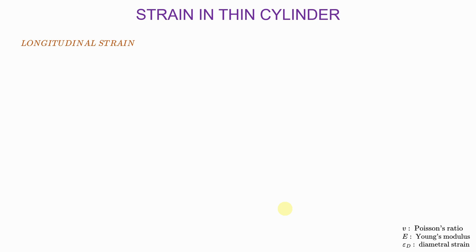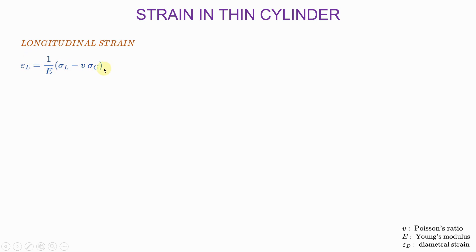Now let us look at the strain in thin cylinders. The first one is the longitudinal strain, and the equation for it includes expressions for both the longitudinal stress and the circumferential stress. The V that you see in the equation is Poisson's ratio, which is usually given to you in the question — for example, V equals 0.3. You can replace the longitudinal stress and the circumferential stress in that equation with their own respective equations to get a combined expression for the longitudinal strain.